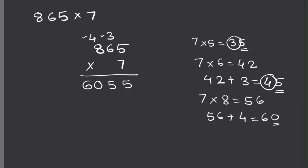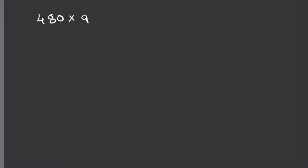Our next example is 480 times 9. The numbers are written side by side, so we need to line this problem up: 480 times 9. Make sure that 0 and 9 are lined up because they are in the ones place. Now we are ready to multiply.